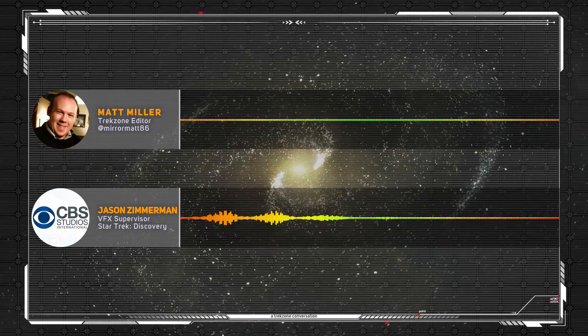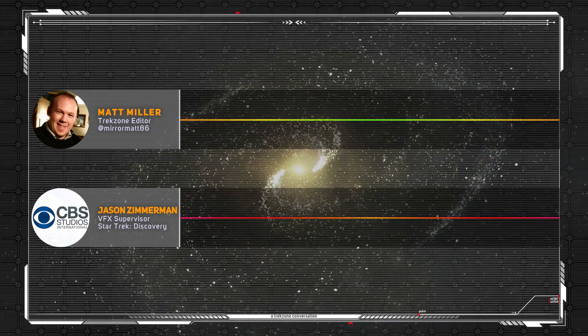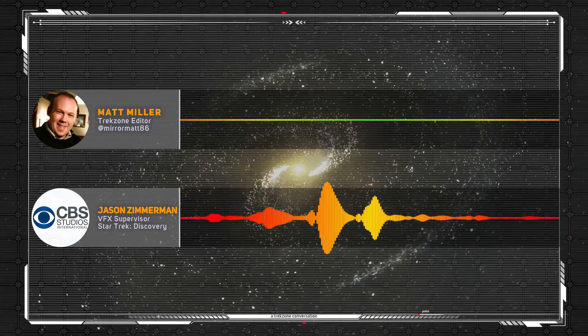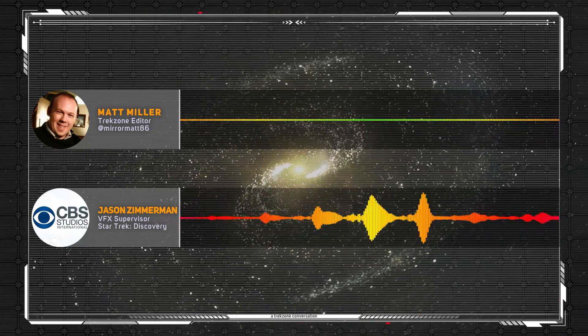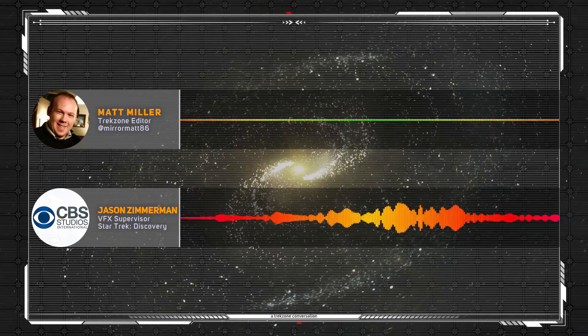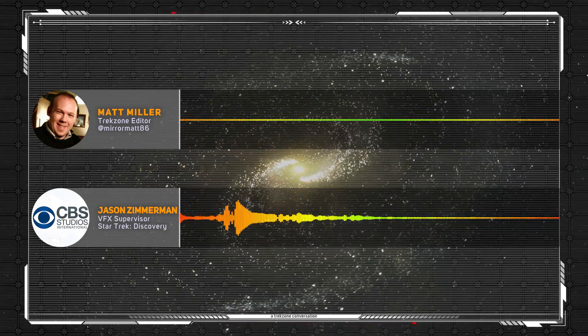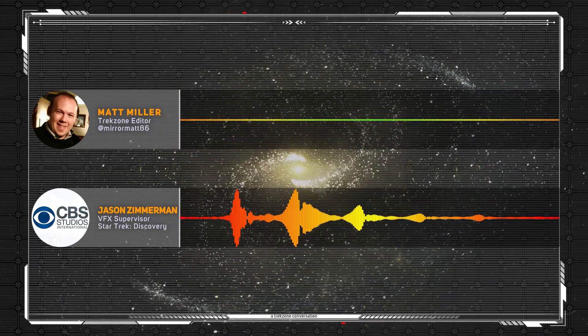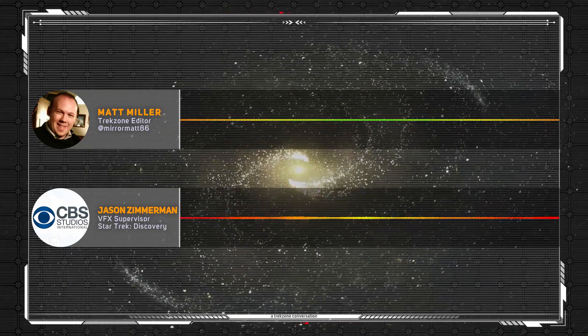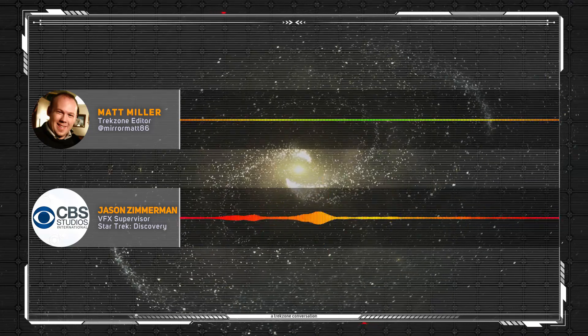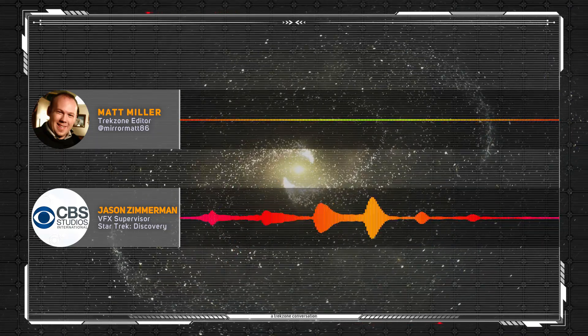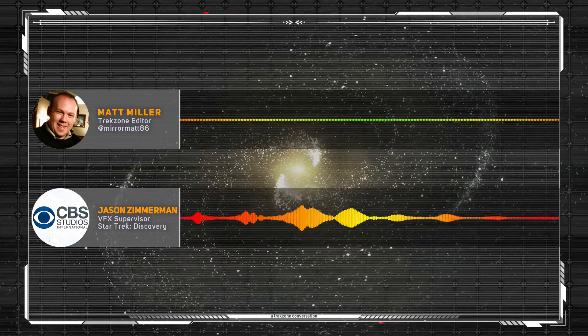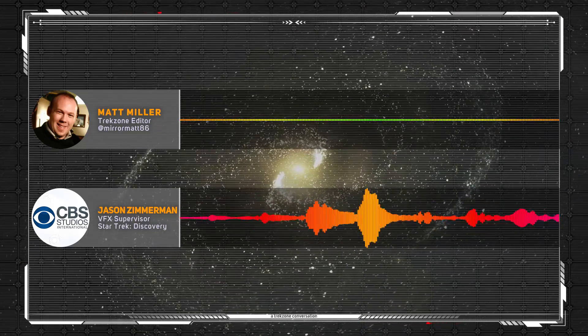One thing that we did do is we built sort of a battlefield diagram very early on that defined how the Discovery and Enterprise would be surrounded, where the Section 31 ships would show up, how they would surround them, where the drones would sort of occupy, where the battlefield was. So we kind of had an idea, this basic layout of okay, here's where things are.